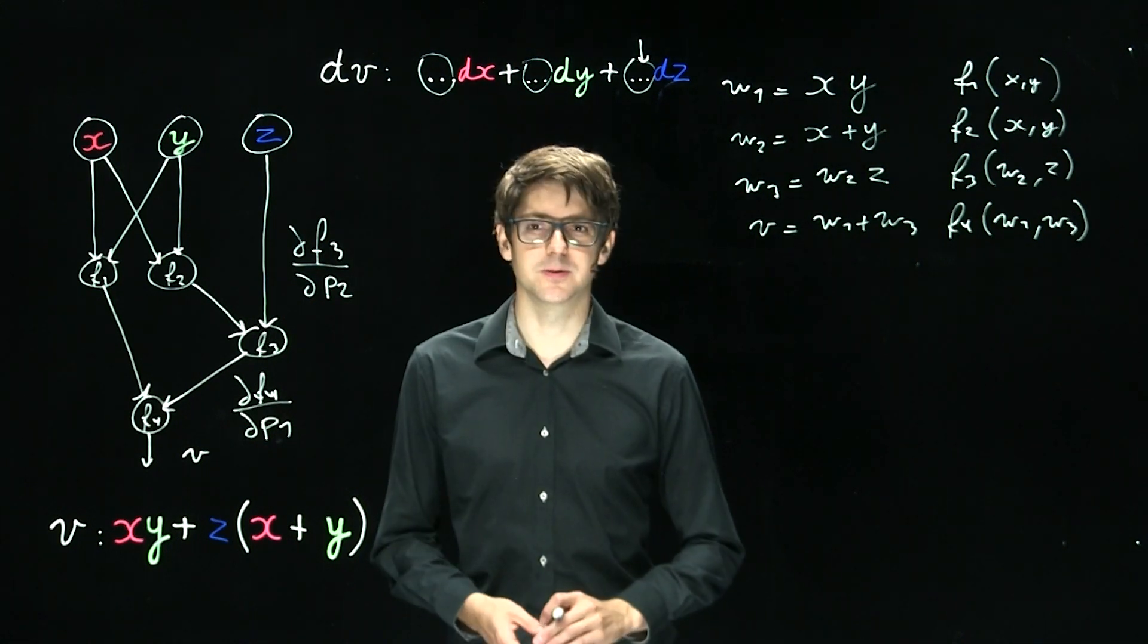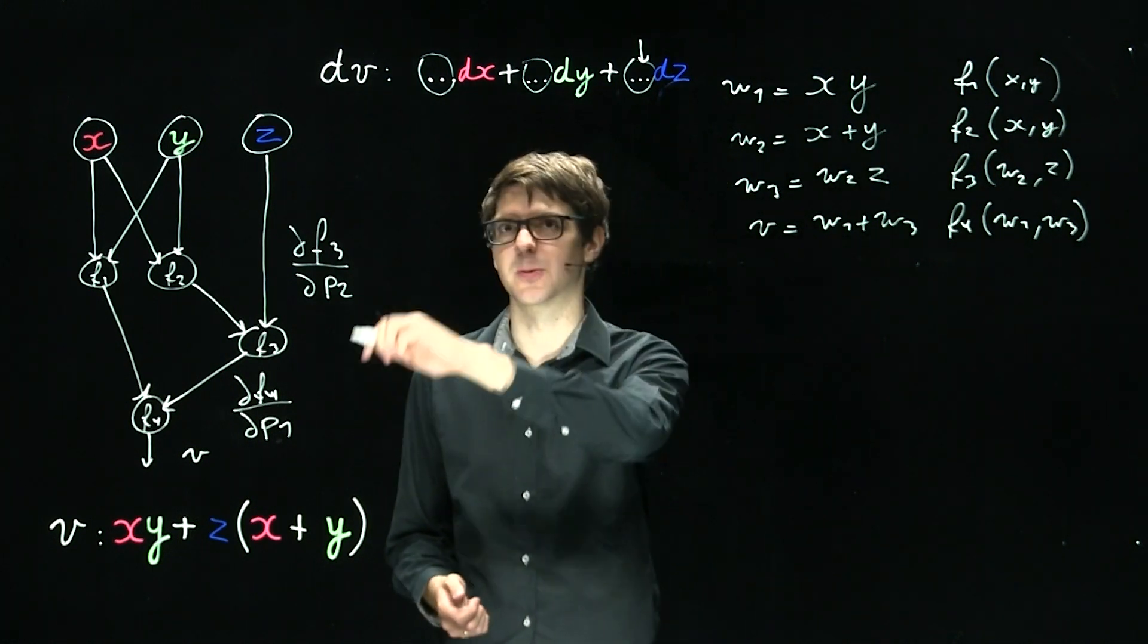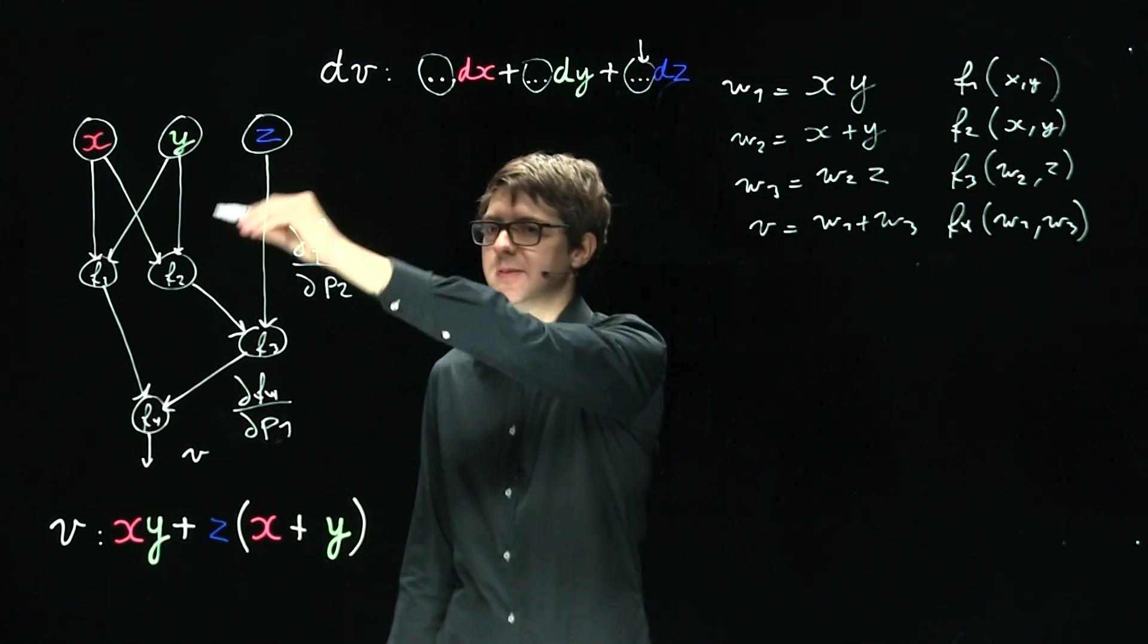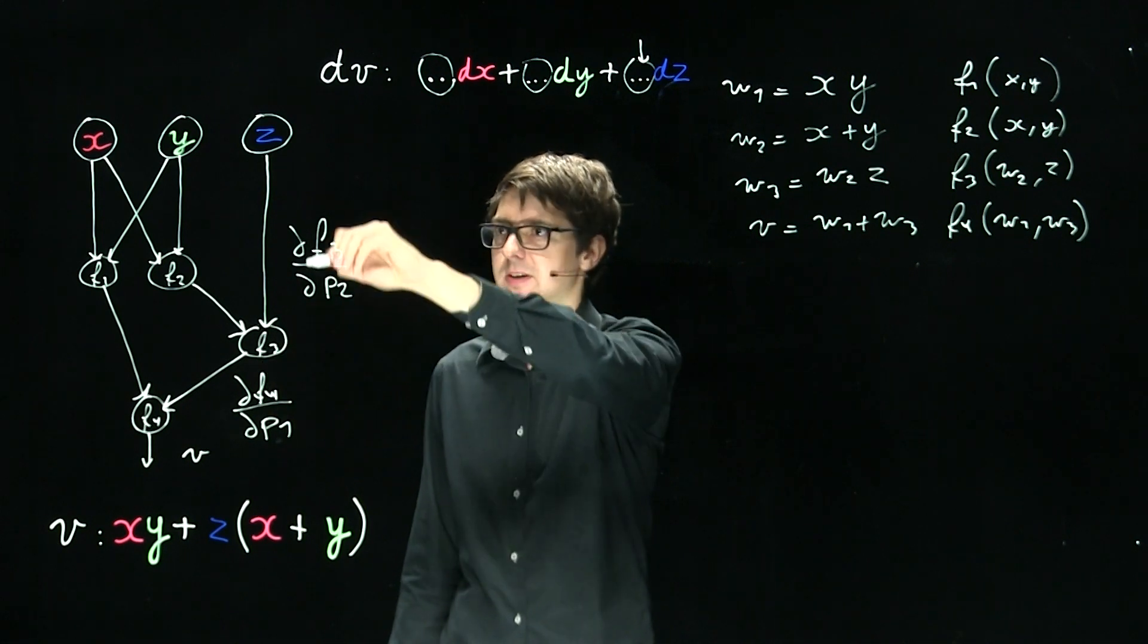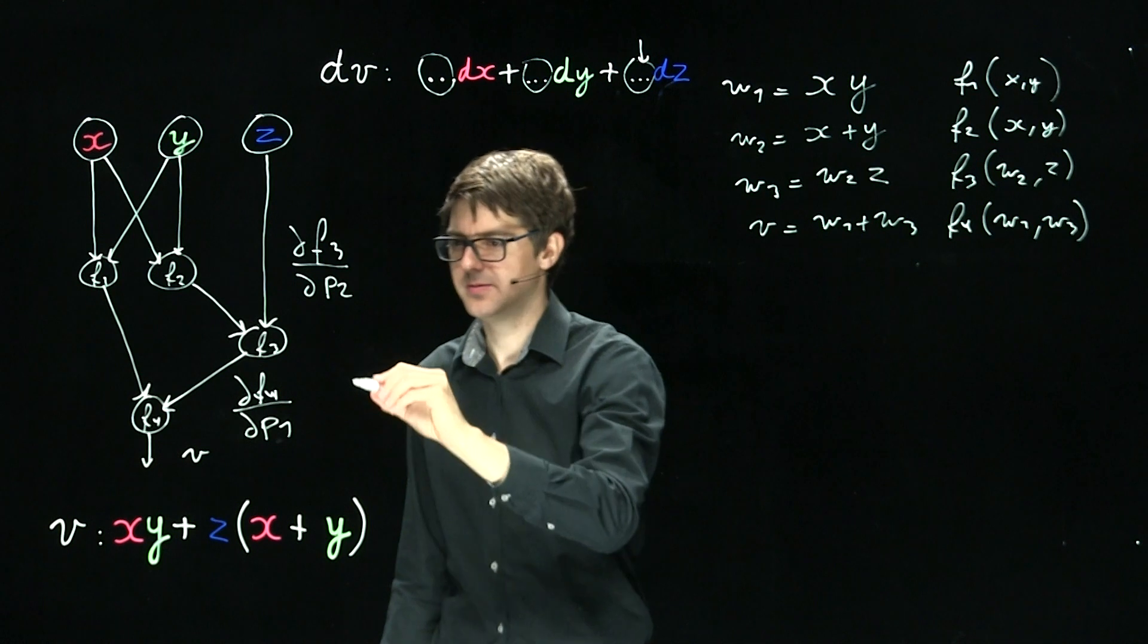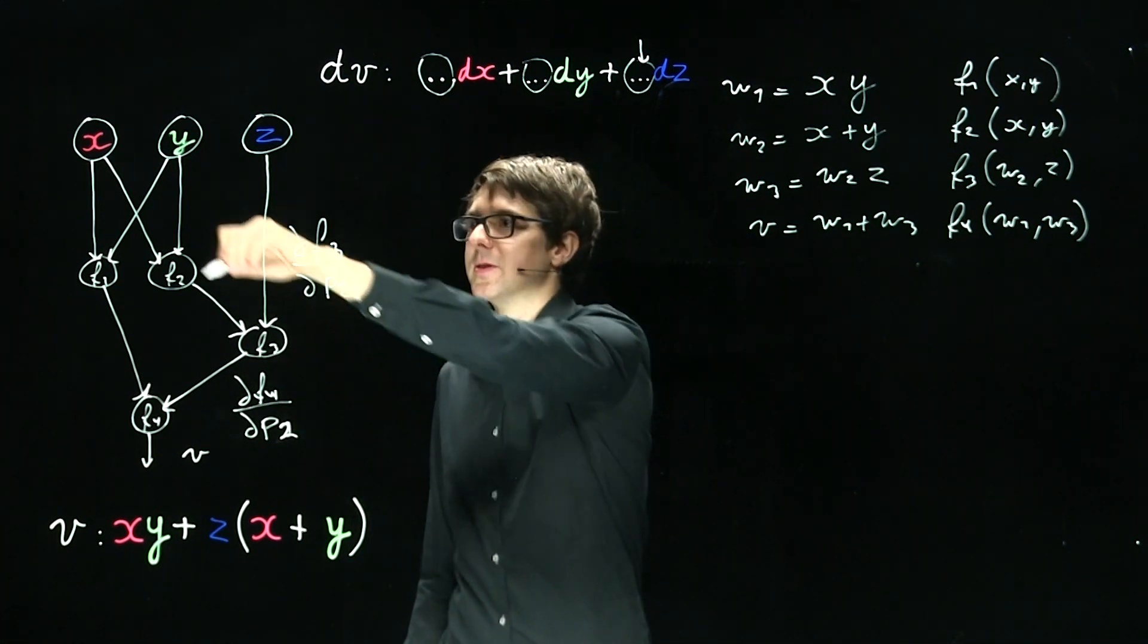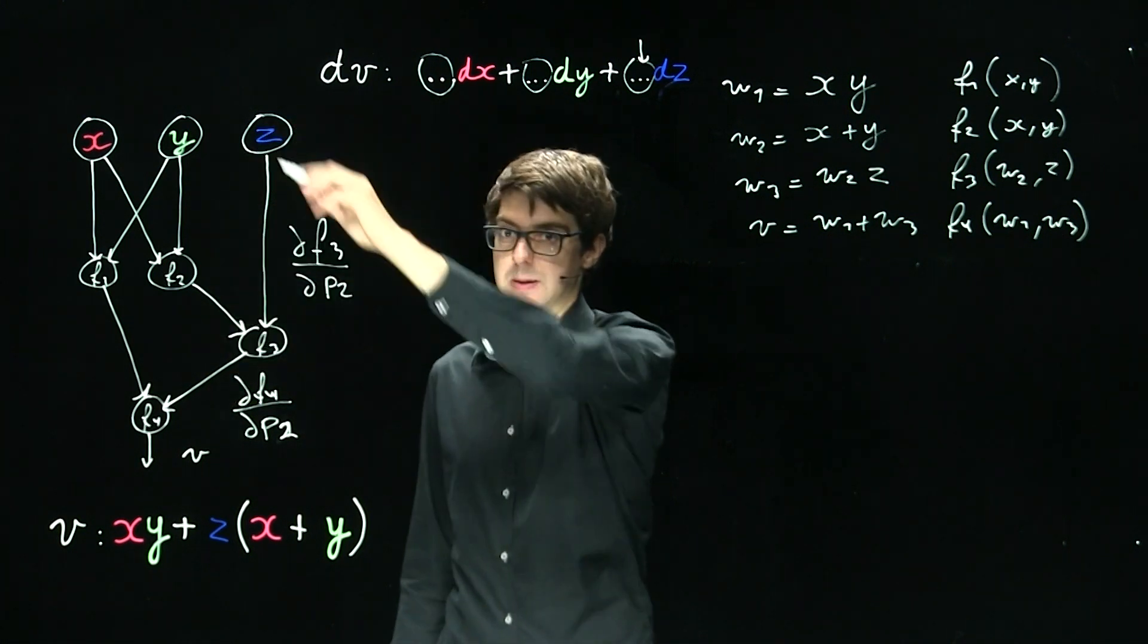So in the first block we've seen how we can use the chain rule to get this gradient. And we can do this, we can interpret this as bubbling upwards in the expression graph. I just spotted a mistake here. We just bubble upwards going all the possible routes that bring us from the output to the input.